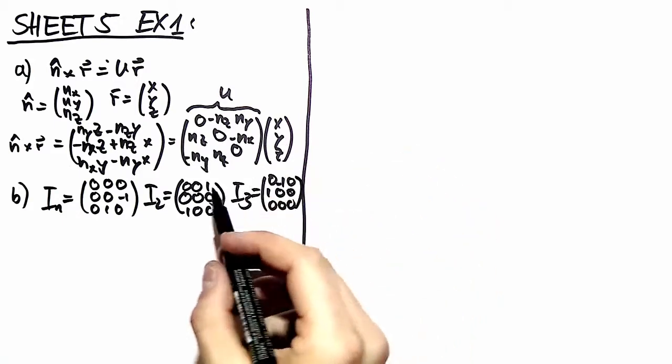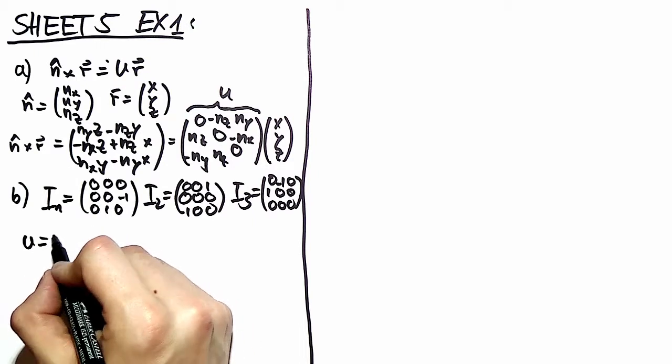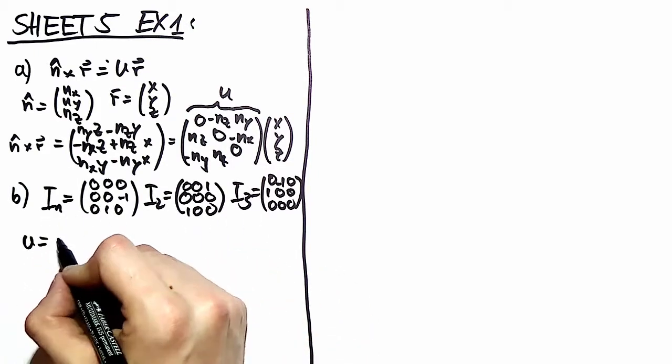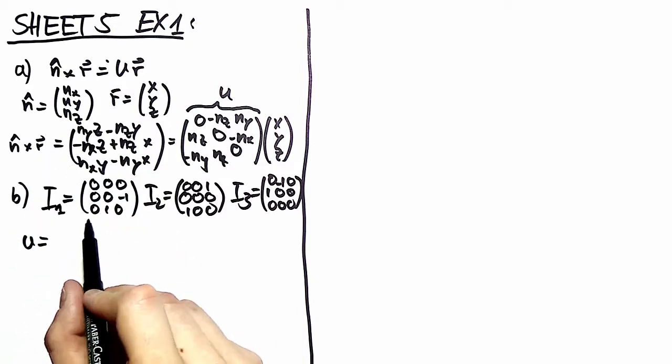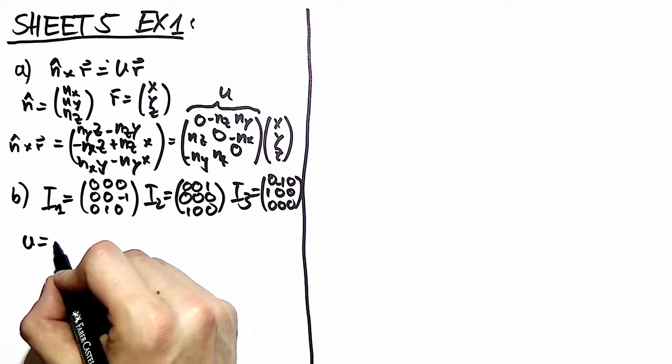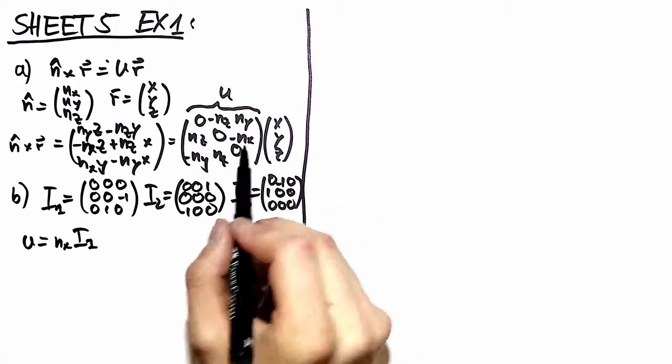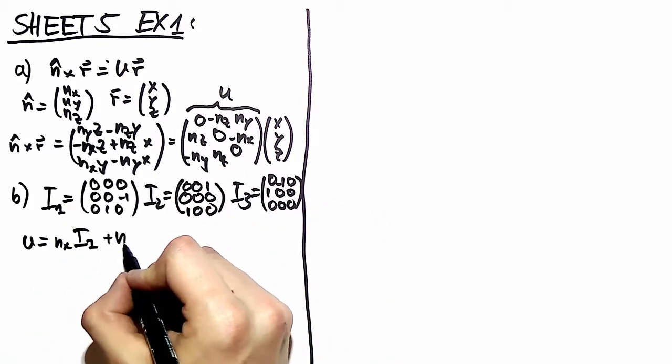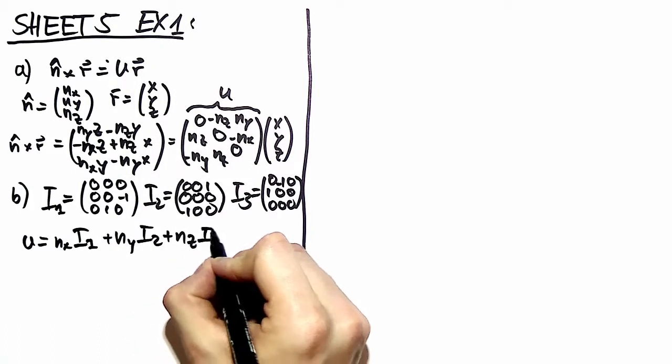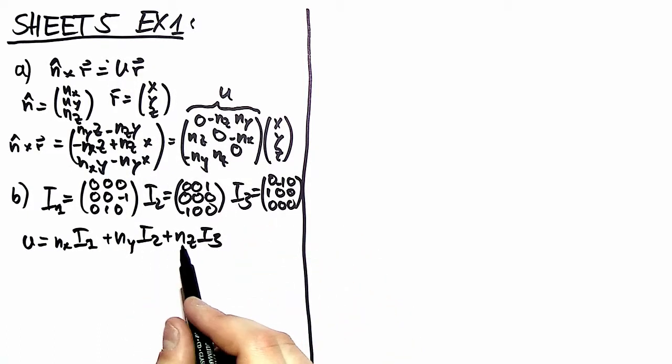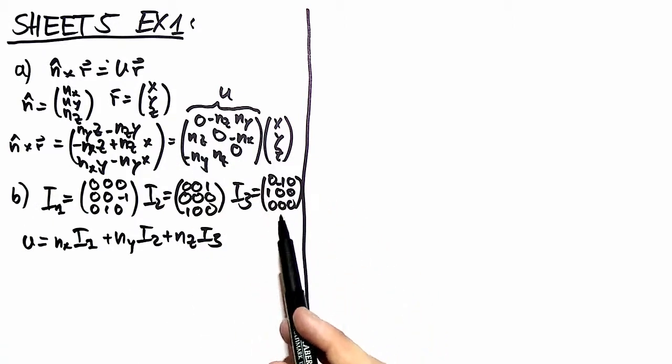So what you do is you say that U is the sum of your matrices here times your n's. So what you recognize is i1. To obtain your u you have to multiply i1 with n_x. So you have here plus and minus. You have n_y, you have to multiply it with i2 and n_z times i3. And you recognize that these infinitesimal generators are basically made to give you the matrix U.